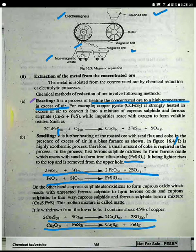For example, copper pyrite strongly heat it in excess of air to convert it into mixture of copper sulfide and ferrous sulfide. While impurity reacts with oxygen to form volatile oxides. Volatile means vapor from gas.